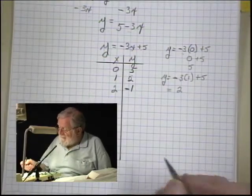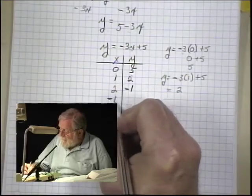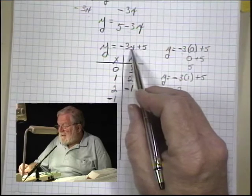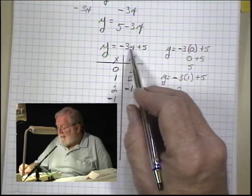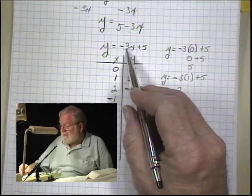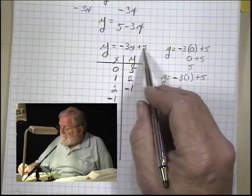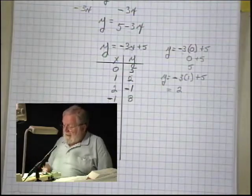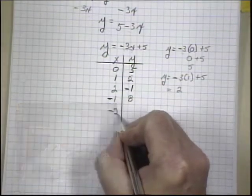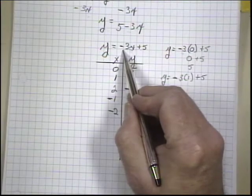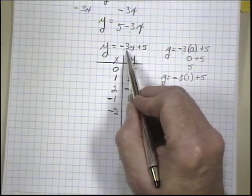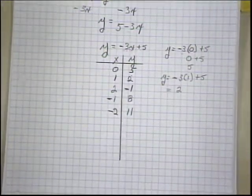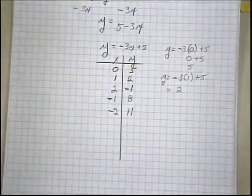Now let's try it with some negative numbers. A -1. A -1 times -3 is a positive 3. Two negatives multiplied together give us a positive. So we'd have a positive 3 plus 5 is going to be 8. And if we had a -2 here, we'd have -2 times -3 is a positive 6, and 6 and 5 is 11.